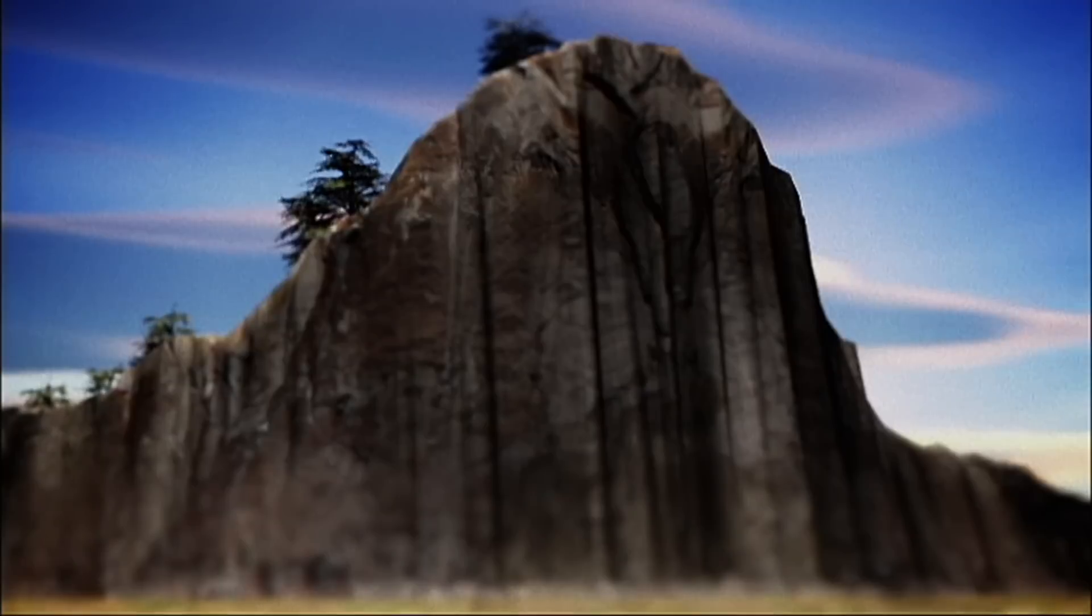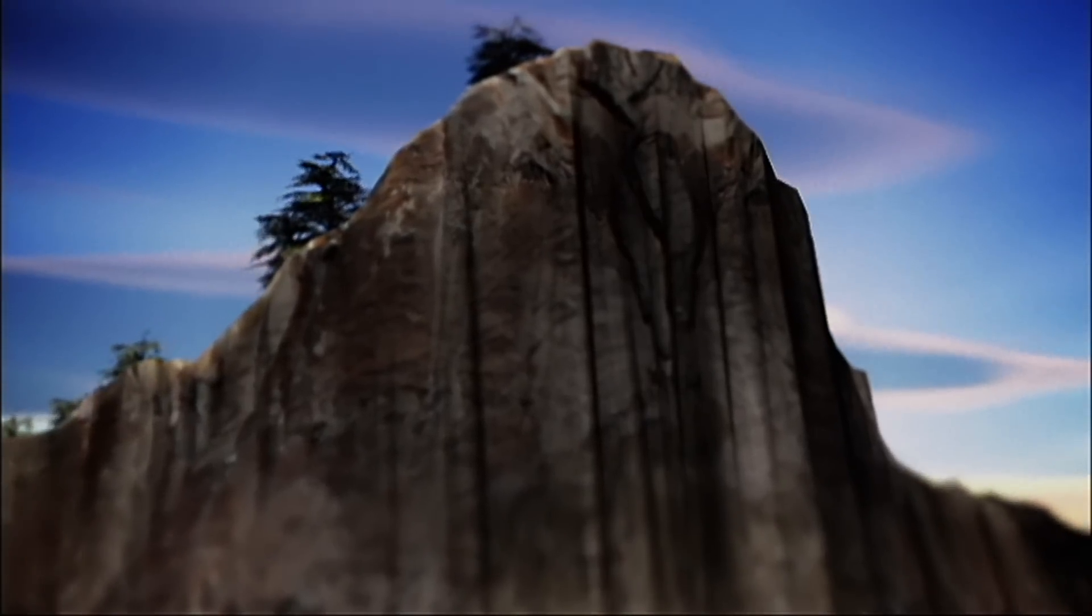Richard Dawkins, the famous Oxford evolutionary biologist, has illustrated how the Darwinian mechanism works using a metaphor he calls climbing Mount Improbable.